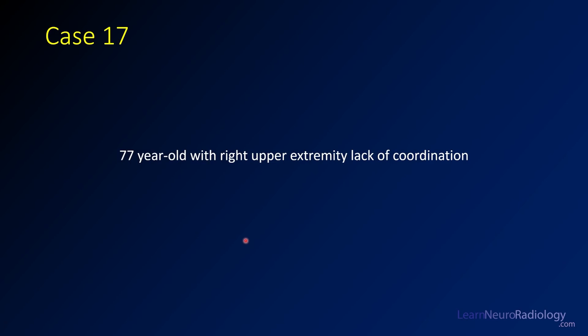Hi everyone, and welcome back to Learn Neuroradiology for case 17 of the brain tumor review series. Today we're looking at a 77-year-old with right upper extremity lack of coordination — some ataxia in that right upper extremity, right arm not working so well.